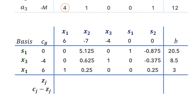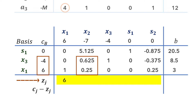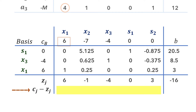For the Zj row, we again ignore the first row since the Cb value is 0. For the x1 column: negative 4 times 0 plus 6 times 1 = 6. Negative 4 times 0.625 plus 6 times 0.25 = negative 1. Then we have negative 4, 0, 3, and negative 16. For the net evaluation row: 6 minus 6 = 0; negative 7 minus negative 1 = negative 6; then 0, 0, and negative 3.